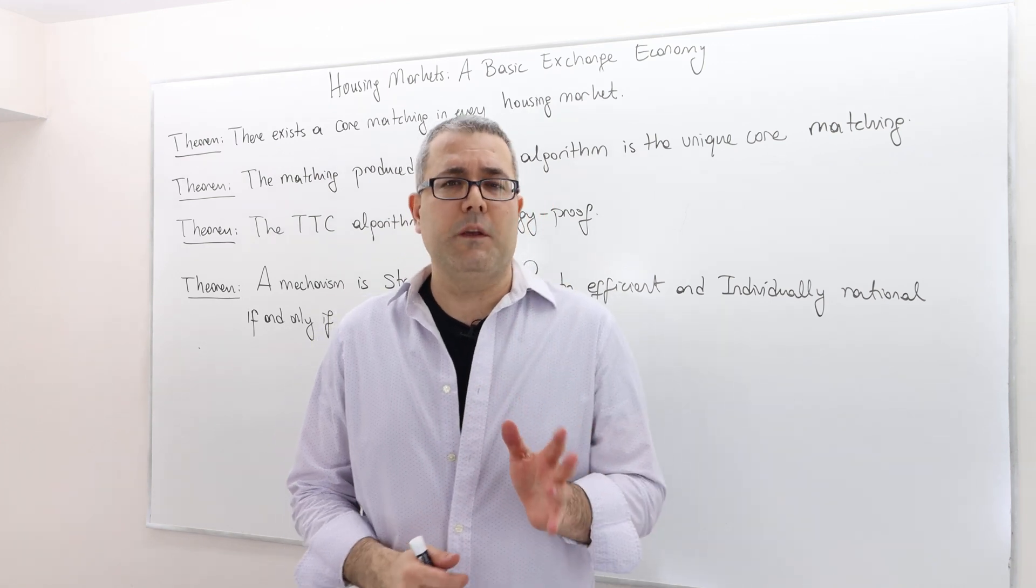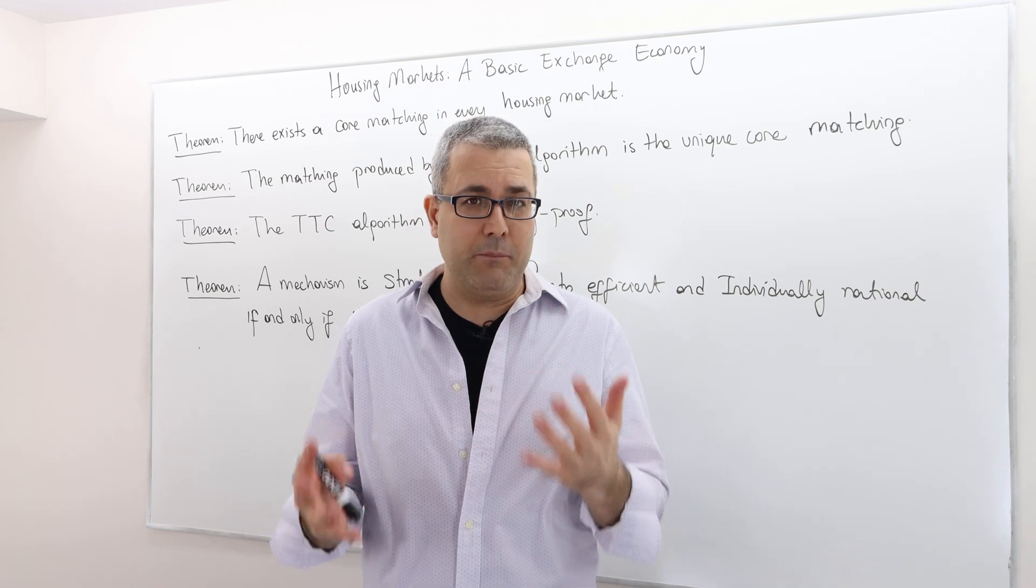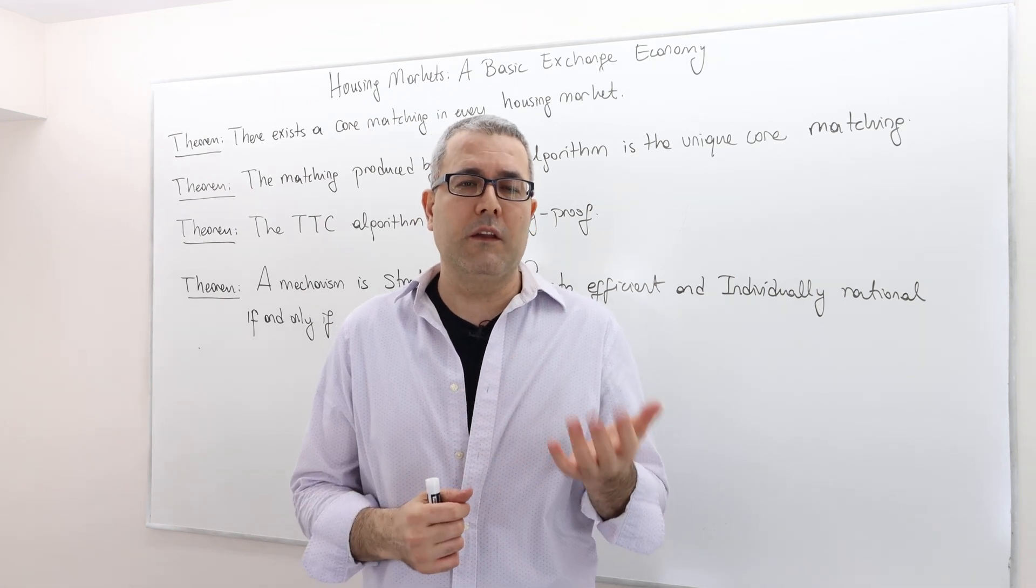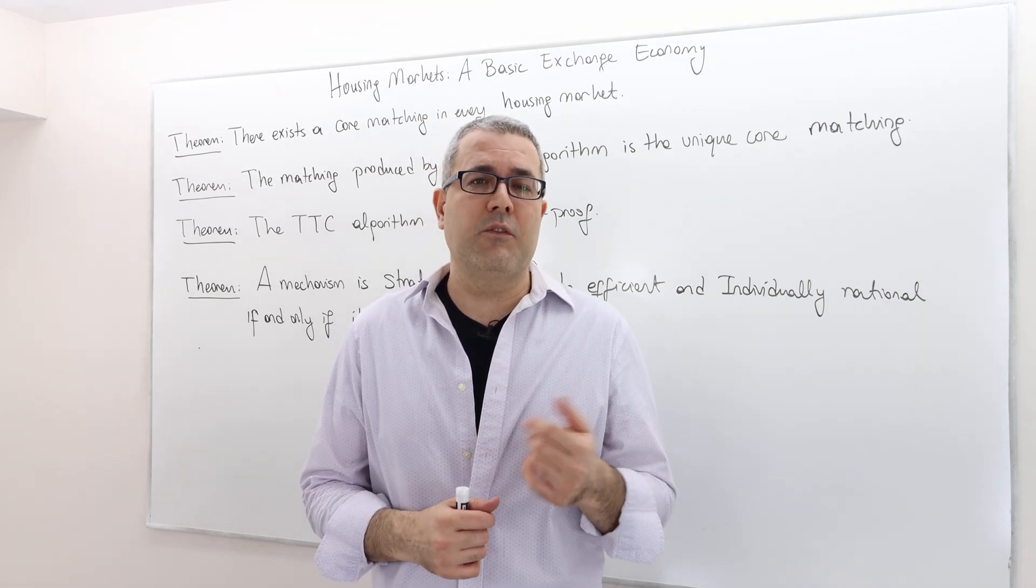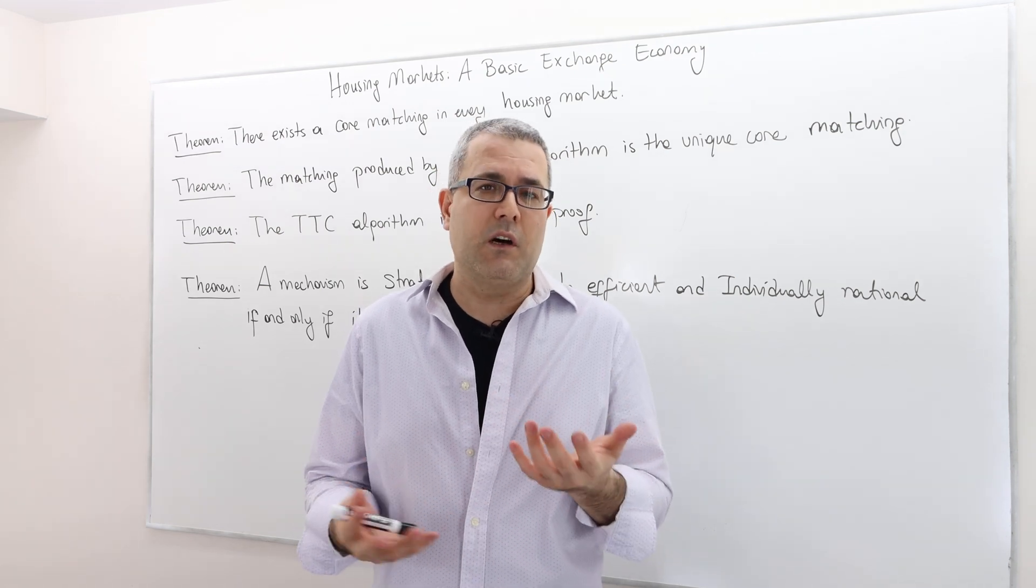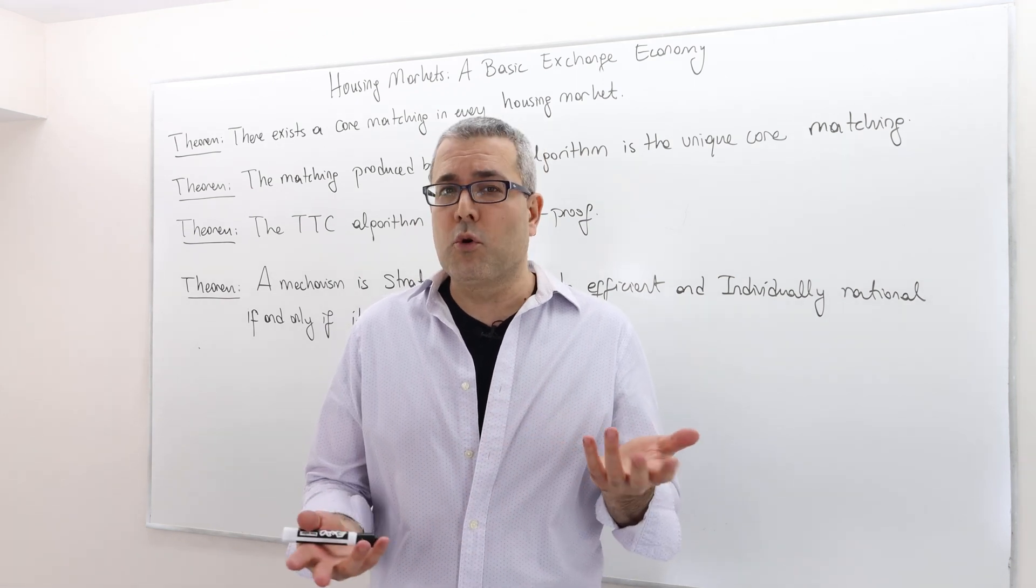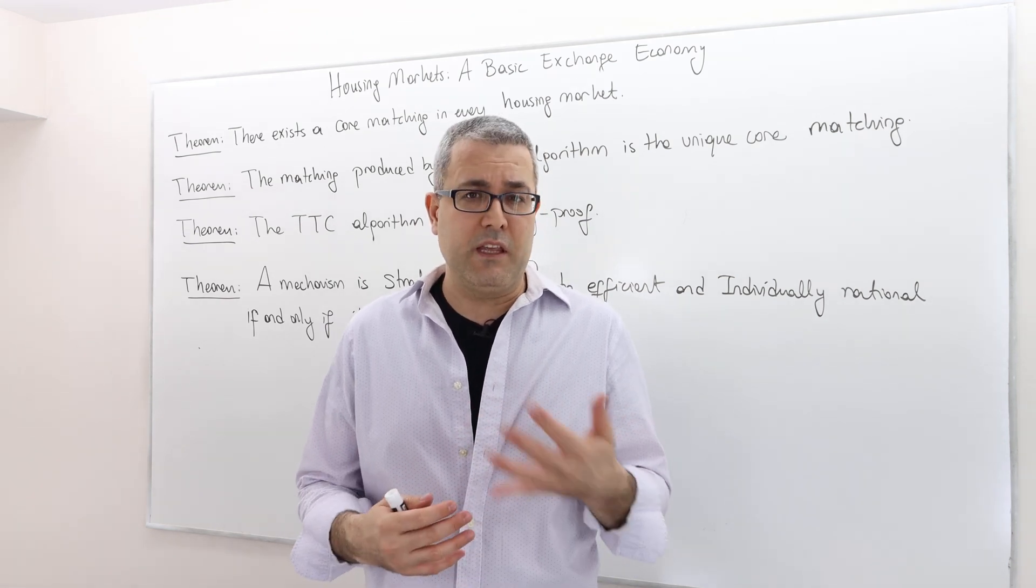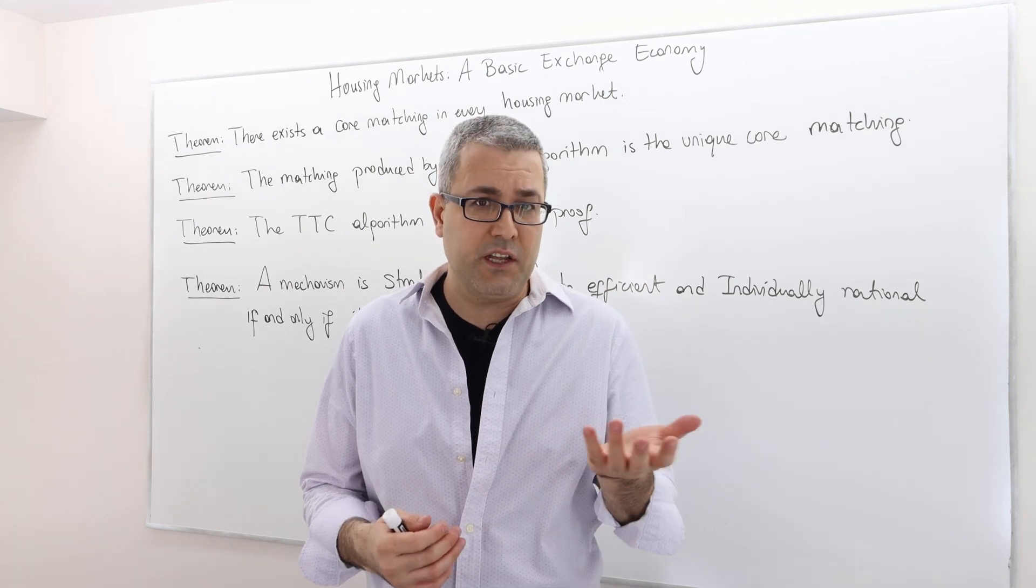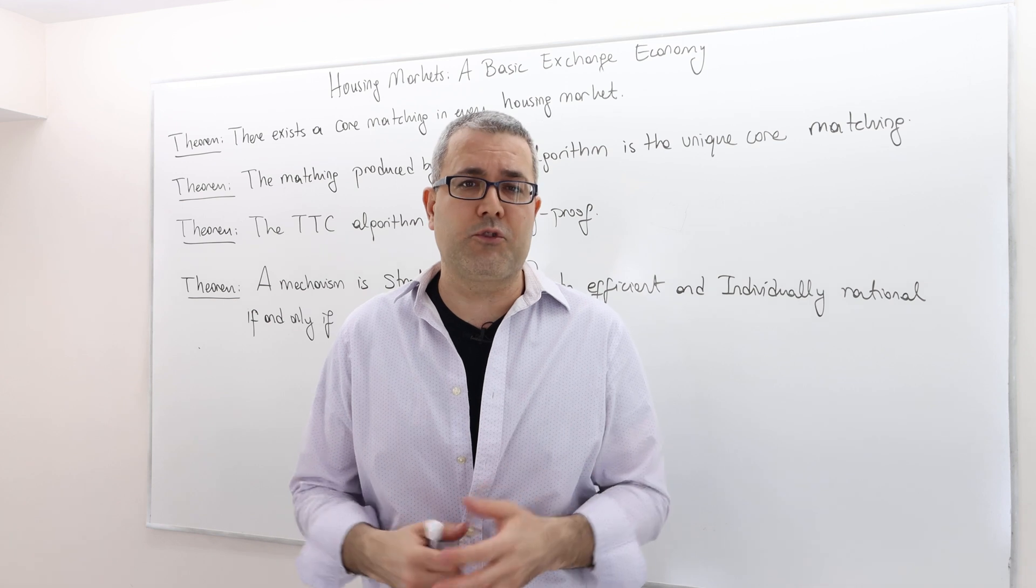Hi guys. So in the previous episode, we talked about the top trading cycle algorithm. It's a mechanism that we can apply to any housing market. But the thing is, it's a bit bizarre mechanism or algorithm, and there might be slightly more or easier mechanisms we can think of. One of them is serial dictatorship, for example. Why don't we use serial dictatorship instead of top trading cycles?